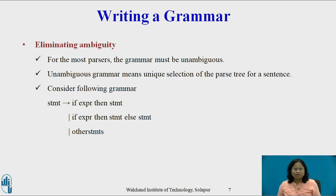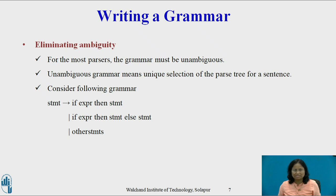Eliminating Ambiguity: A grammar that produces more than one parse tree for some sentence is said to be ambiguous. For most parsers, the grammar must be unambiguous. Sometimes an ambiguous grammar can be rewritten to eliminate the ambiguity. As an example, we shall eliminate the ambiguity from the following dangling else grammar.